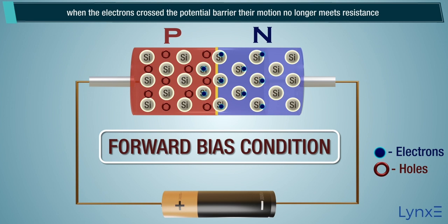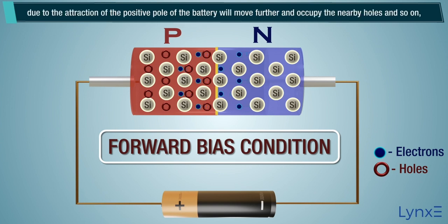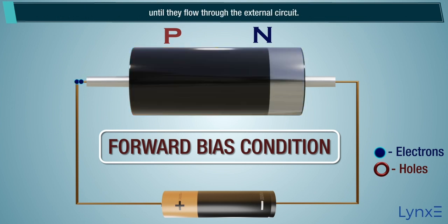When the electrons cross the potential barrier, their motion no longer meets resistance, and thus more easily occupy the holes in the P-zone. Now, the electrons that occupied the P-side holes, due to the attraction of the positive pole of the battery, will move further and occupy the nearby holes, and so on, until they flow through the external circuit.